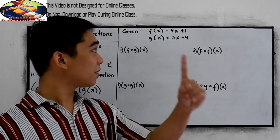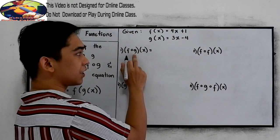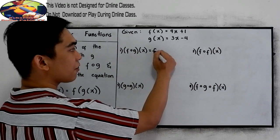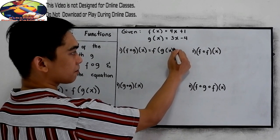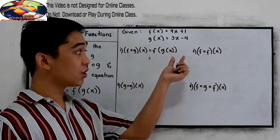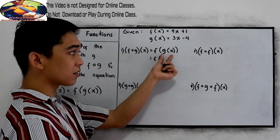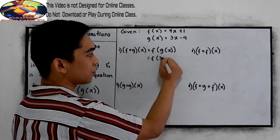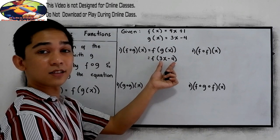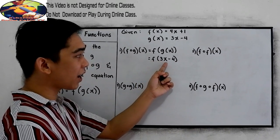Now let's have problem number one: f composed of g of x, which is equal to f of g of x. Therefore we need to substitute first g of x. In our given, g of x is 3x minus 4. Let's substitute the value of g of x.